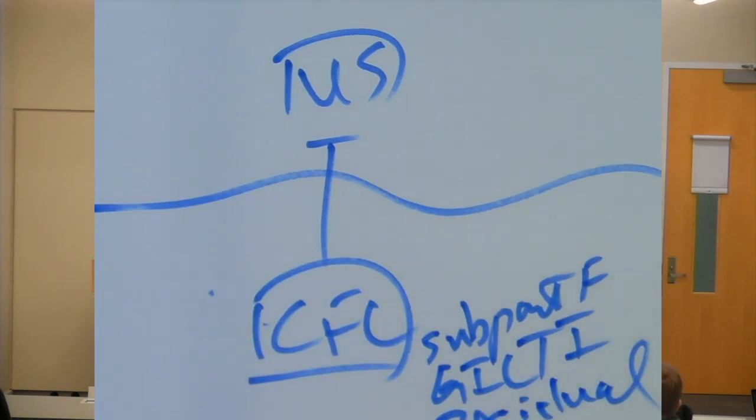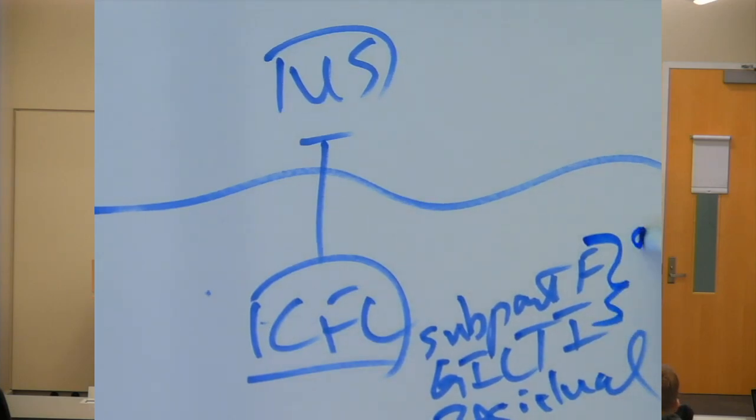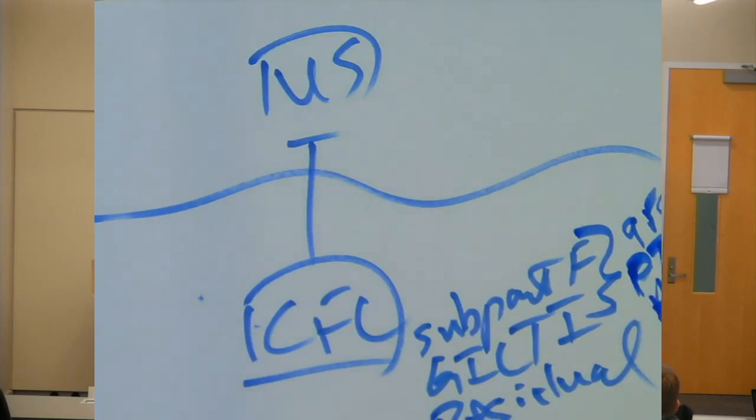which is the earnings and profits minus subpart F income and GILTI. So, if we have this kind of situation, these two,